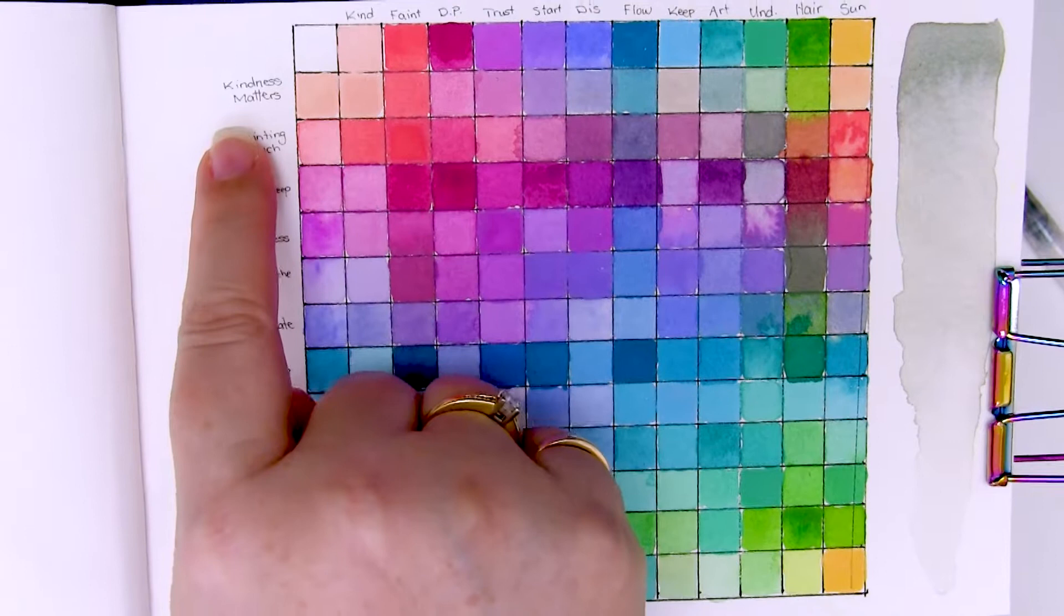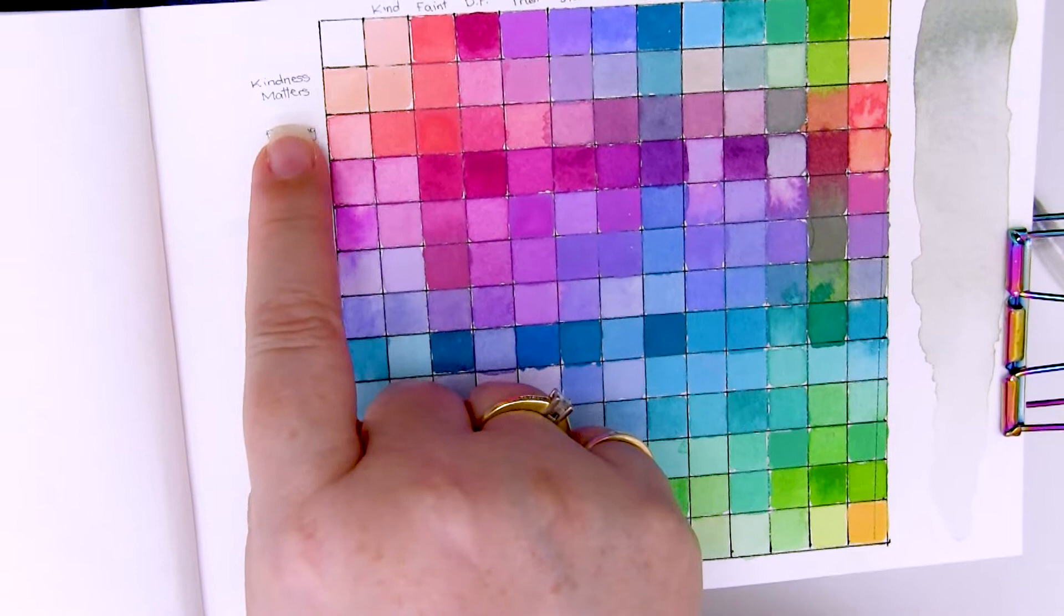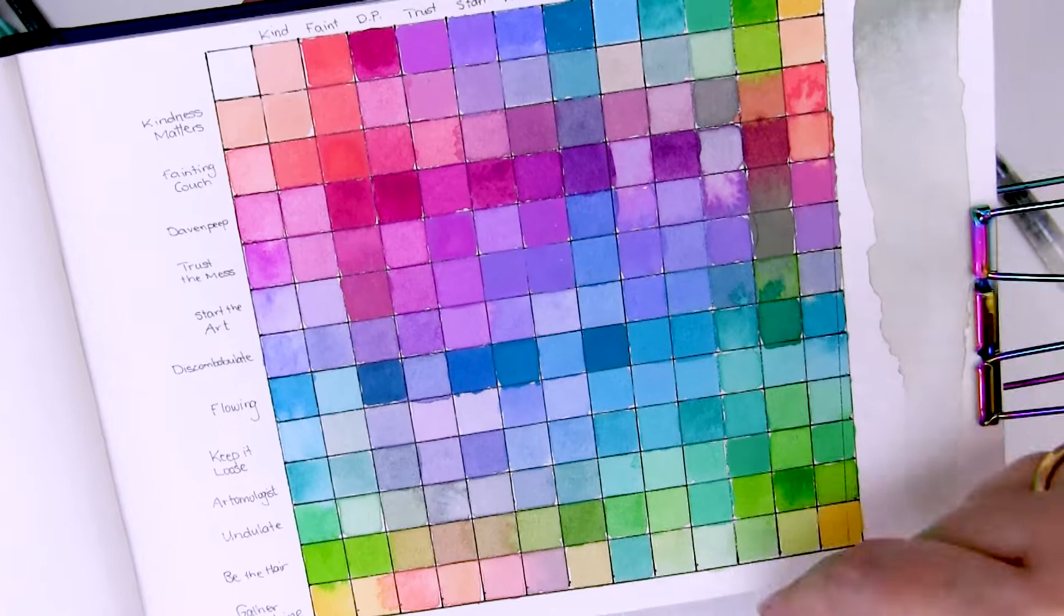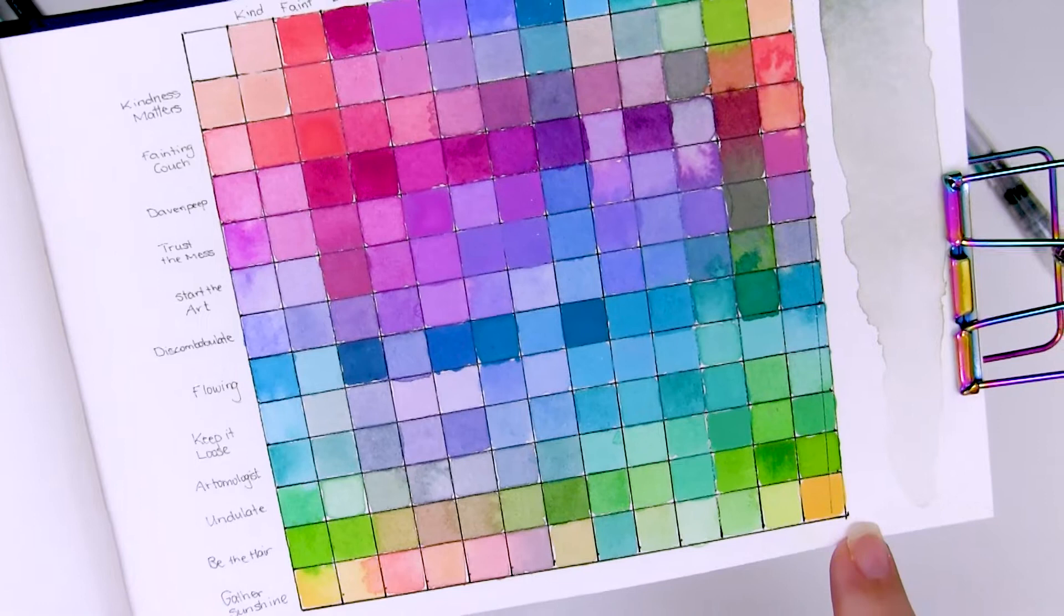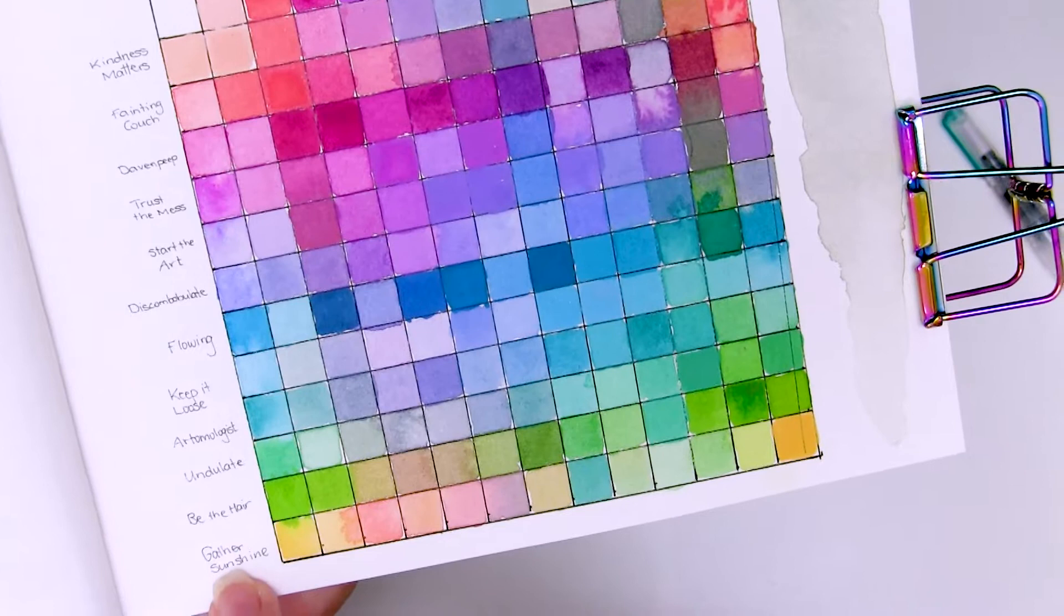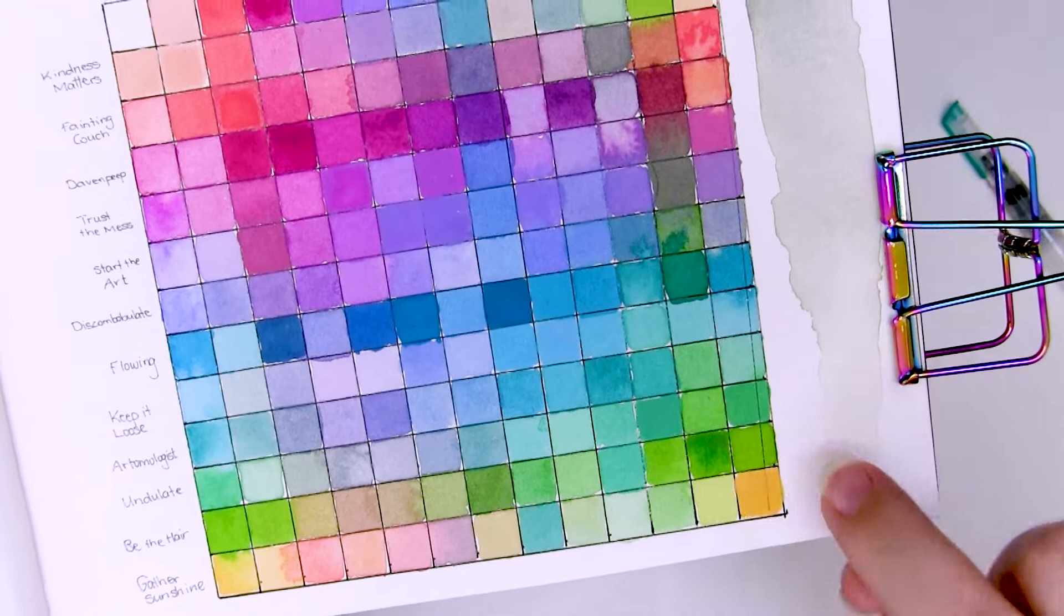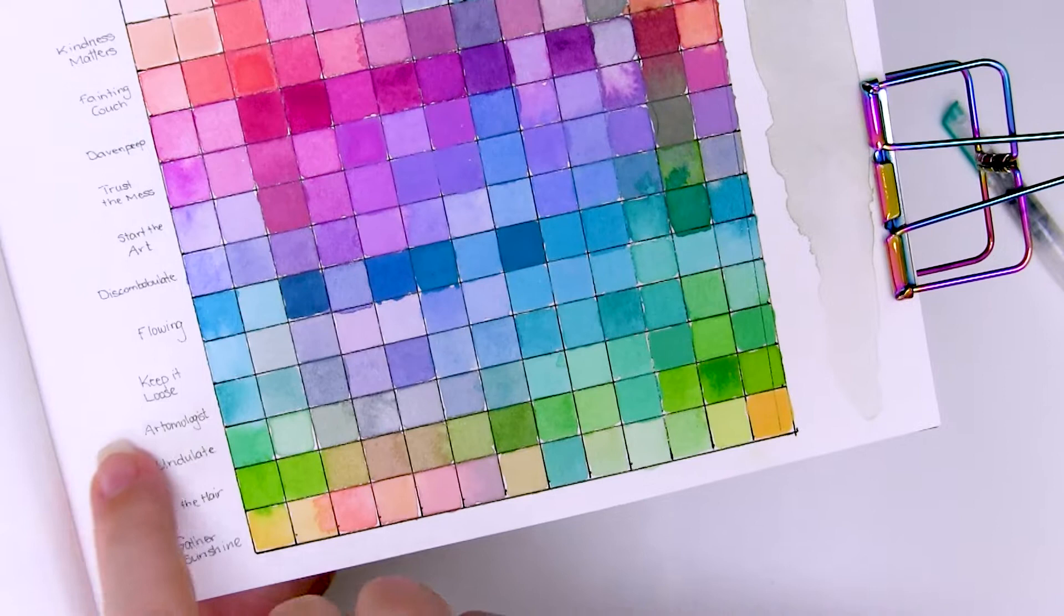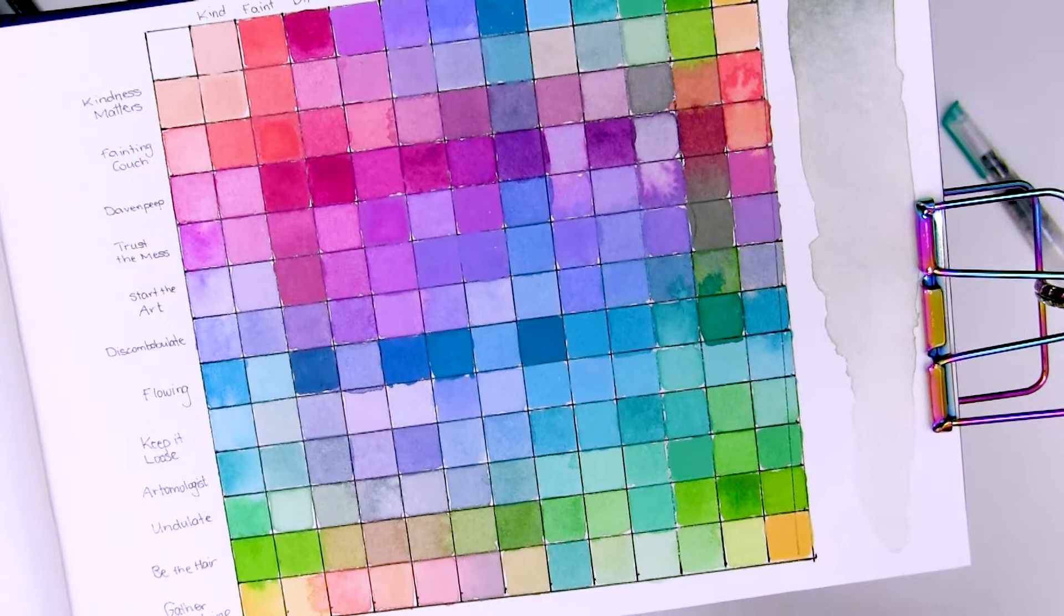So the name on the side here is the most dominant color as you go across. So all across, the Kindness Matters will be the most dominant color in the mix, and some of these, depending on the color it's mixing with, turn out stronger than others. And then as you go down, for example, then Gather Sunshine is the most dominant color. So even though you've got Sunshine here and Hair, when you mix Gather Sunshine and Hair, this one is the more yellow. So we've got Be The Hair and Sunshine, then the Be The Hair, the green, is the more dominant color. So you can see the difference between the two. As you move across, whatever is listed on the side is always the most dominant color, and I've done my color mix that way.